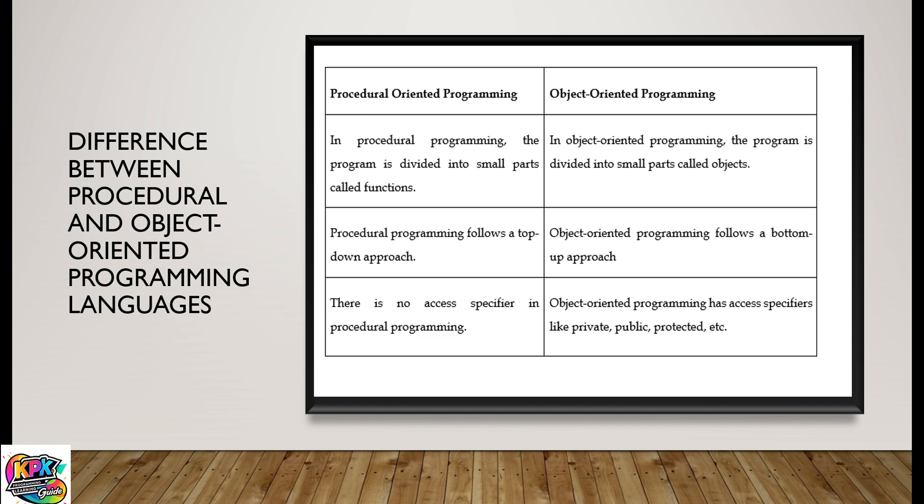In procedural programming the program is divided into small parts called functions, whereas in object-oriented programming the program is divided into small parts called objects.